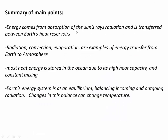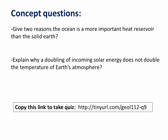In summary: energy comes from absorption of the sun's rays and is then transferred out between Earth's heat reservoirs. Examples of exchange mechanisms include radiation, convection, and evaporation from Earth to atmosphere. Most heat energy is stored in the ocean due to its high heat capacity and constant mixing. Earth's energy system is theoretically at equilibrium, with a balance between incoming and outgoing radiation, and if we tweak this balance it changes the equilibrium temperature, but not necessarily by a lot. See you in class number eight.